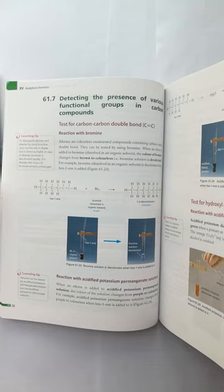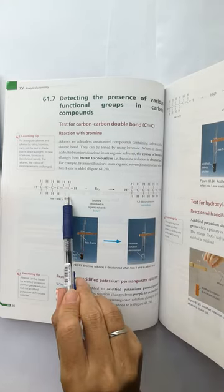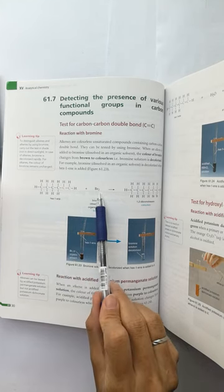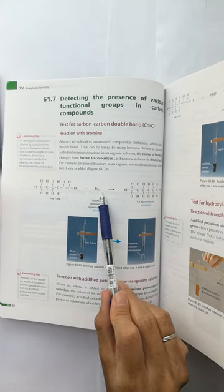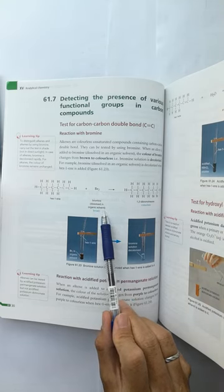The first functional group is carbon double covalent bond. To test for the presence of C=C double covalent bond, we can use bromine (Br2) which is dissolved in an organic solvent.